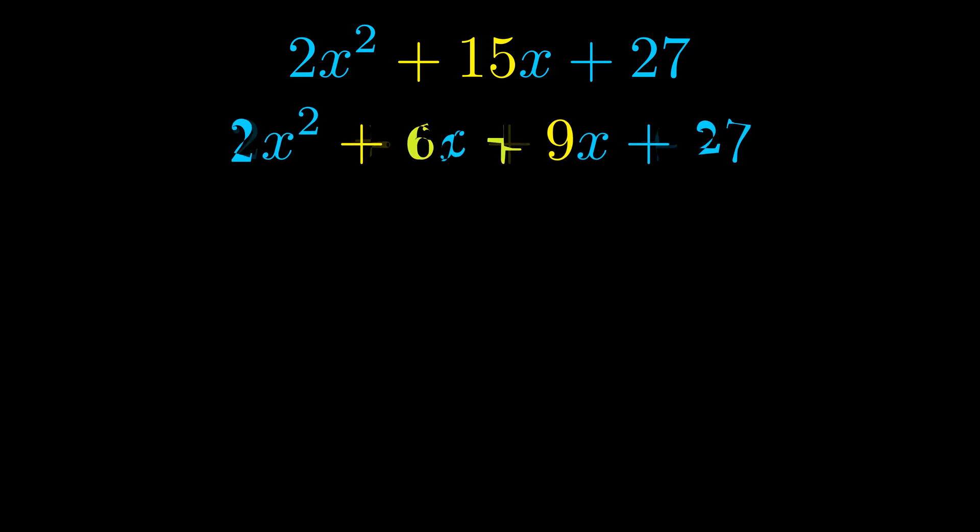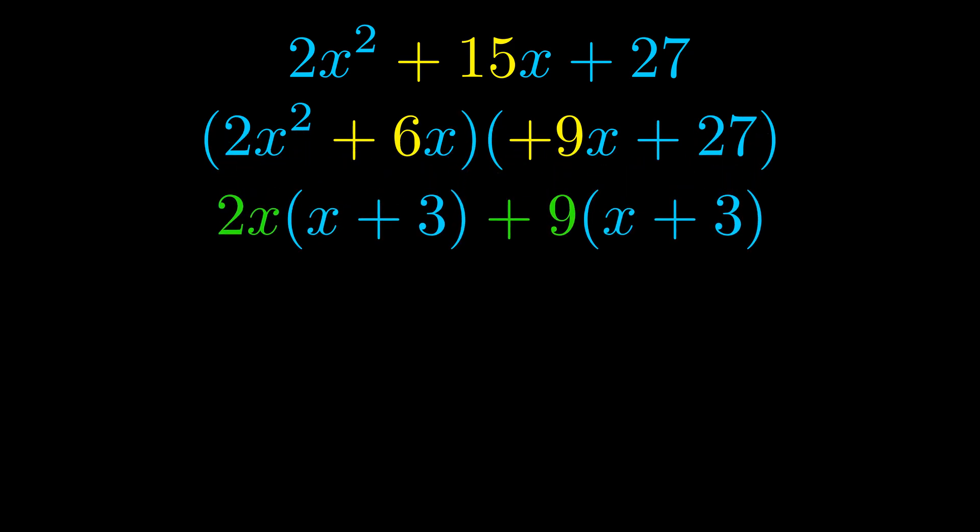Once we've done this, we go ahead and put parentheses around the first term and the last term, and we do that so that we can take the greatest common factor out of both terms. We can see the greatest common factor is now outside in green. Notice also how what remains inside of the parentheses is the same in both cases. The blue values are the same.